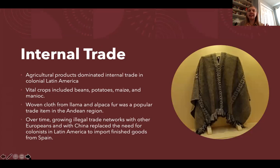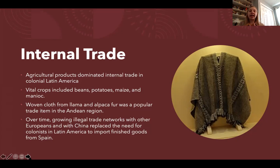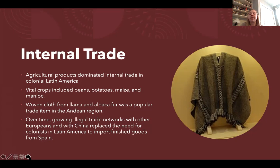Internal trade in Spanish America includes agricultural products — vital crops being beans, potatoes, maize, and manioc — as well as woven cloth from llama and alpaca fur. As settlements became more stable and developed, Latin Americans increasingly traded around the mercantilist restrictions that Spain was placing on them.